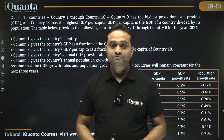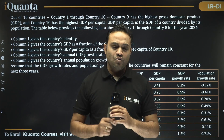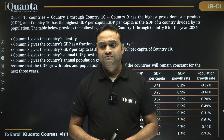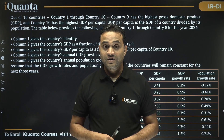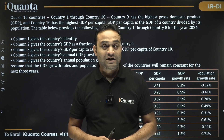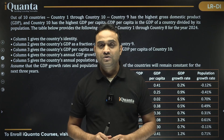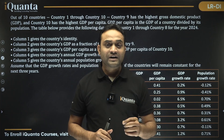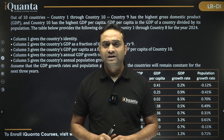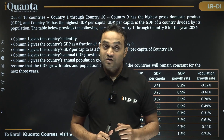This is the CAT 2024 LRDI section, Slot 3. This set was based on complete data interpretation. The set was easy but the calculations were very lengthy. If you are not smart about these calculations, it would take so much time that you'll regret attempting this type of set. But if you are smart about it, you can solve all questions very quickly — that's where approximation comes in.